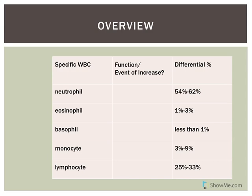You have a chart in your notes to fill in based on what you think is important for the different white blood cells. Of the white blood cells, the most common are neutrophils — you'll have no problem finding one on the blood smear. The second most common will be the lymphocytes, then monocytes, followed by eosinophils and basophils. You will struggle to find eosinophils and basophils.